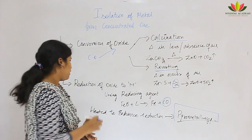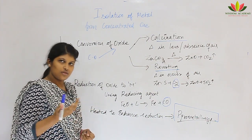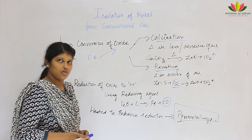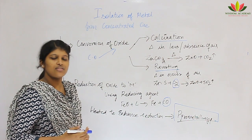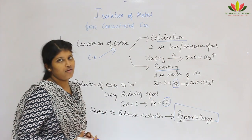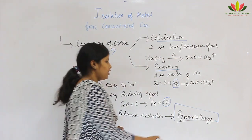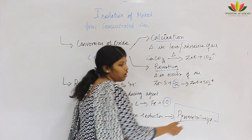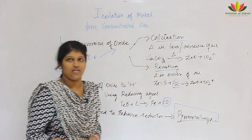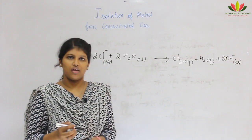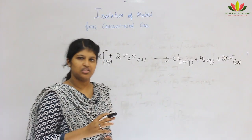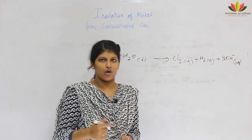Reduction sometimes takes place at normal temperature, but in some cases you need to supply more heat energy — that process is called pyrometallurgy. So we have seen calcination, roasting, followed by reduction.